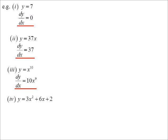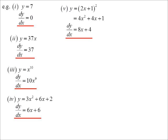For 3x² + 6x + 2, you just differentiate each term individually. 3x² — bring the 2 to the front and multiply by the coefficient — gives 6x, plus 6 from differentiating 6x, plus 0 from the constant. So we get 6x + 6. For (2x + 1)², we have to expand it first: 4x² + 4x + 1. Now we can differentiate to get 8x + 4.